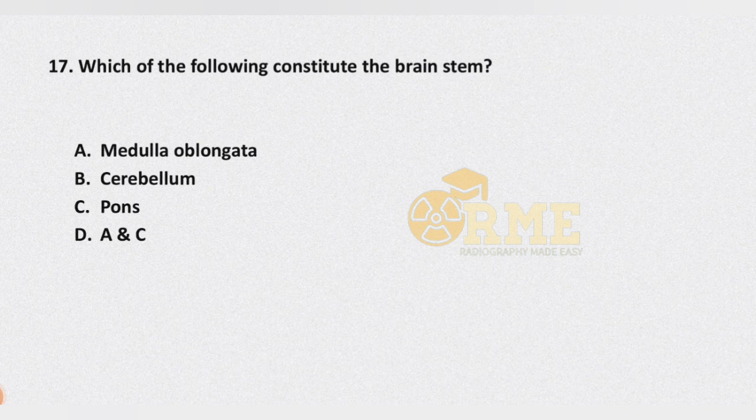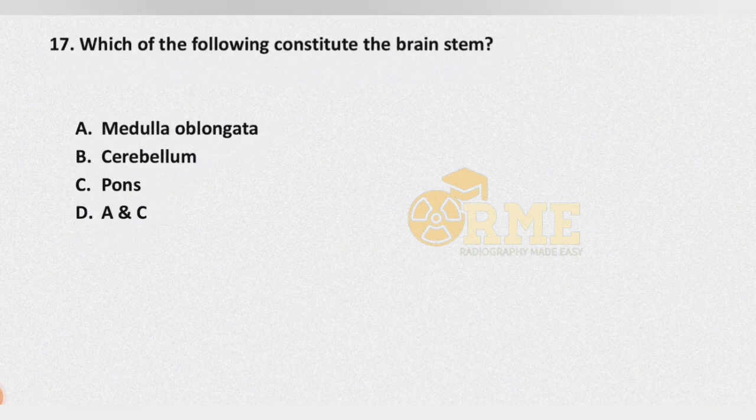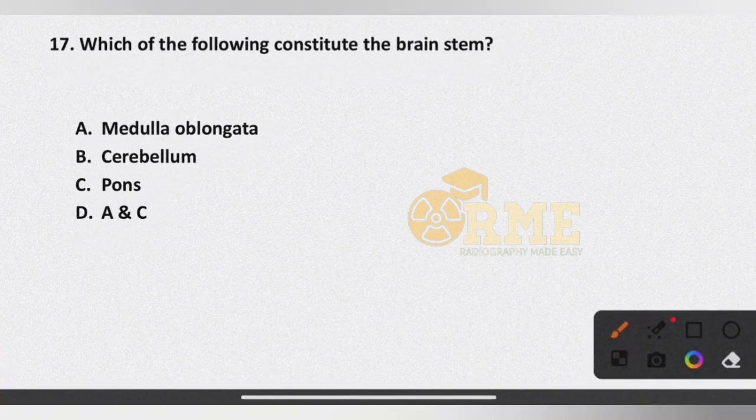Question number 17: which of the following constitutes the brainstem? Options are medulla oblongata, cerebellum, pons, and A and C. Clearly, the brainstem is constituted by medulla oblongata and pons — that is options A and C.